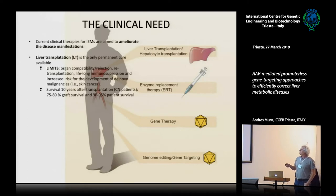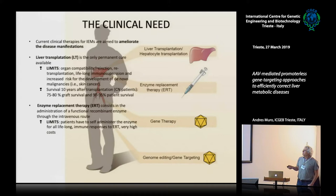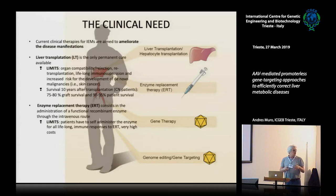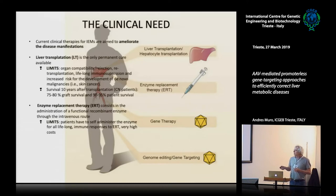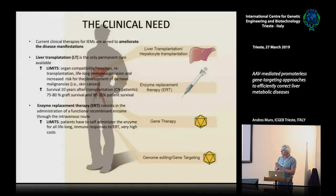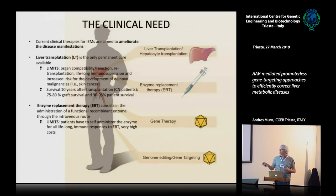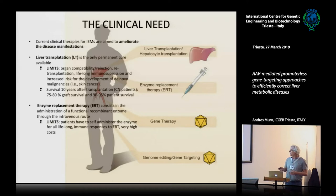Many of these diseases could be treated by enzyme replacement therapy, which consists of the administration of a recombinant protein to the patient. However, in some cases the enzyme could be immunogenic, and it normally has very high cost — around 200,000 euros per year per patient. Over 30 or 40 years, you can calculate how expensive that becomes.